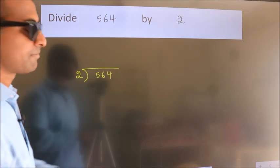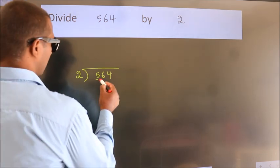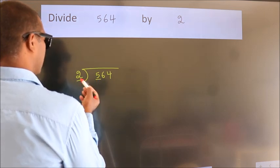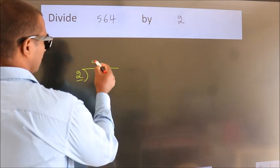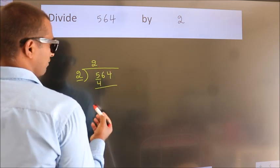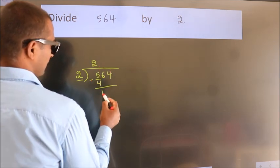Next. Here we have 5, here 2. A number close to 5 in 2 table is 2 times 2, 4. Now we should subtract. We get 1.